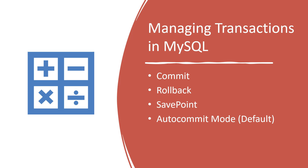Then you have savepoint — marking a spot in your transaction where everything is still correct and consistent. If things start to go wrong later on, you can return to this savepoint and start again from a known good state rather than starting from scratch. And then there's auto commit mode. By default, MySQL operates in auto commit mode, which means each statement is treated as a separate transaction. This can lead to an INSERT operation being committed before you issue a rollback. To prevent this, you need to turn off auto commit.